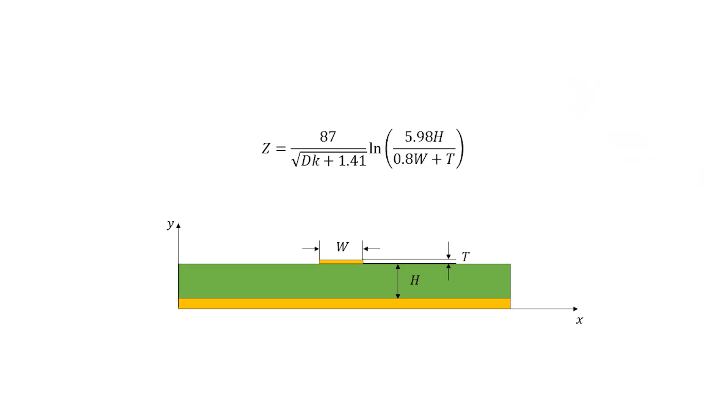Let's look at the IPC 2141 formula. Here we can see all three geometric parameters. Now this formula is really nice because if we just set Z equals to 50 ohms, we can actually solve for the width for a given layer thickness and height.